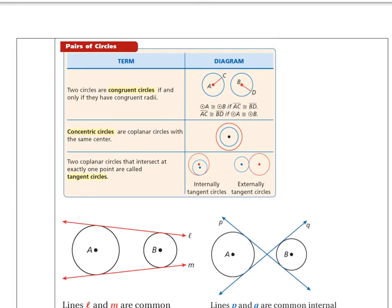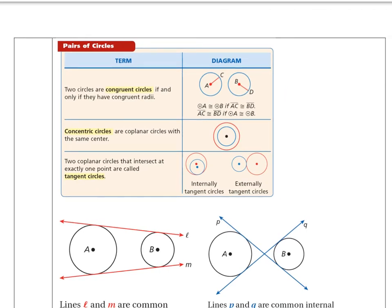Then we've got congruent circles. These are two circles that have the same exact radii. So as long as the radii are the same length right here, then the circles will be congruent. Then you have concentric circles. These are coplanar circles with the same center. So concentric circles. As long as you have the center point, you will be good.